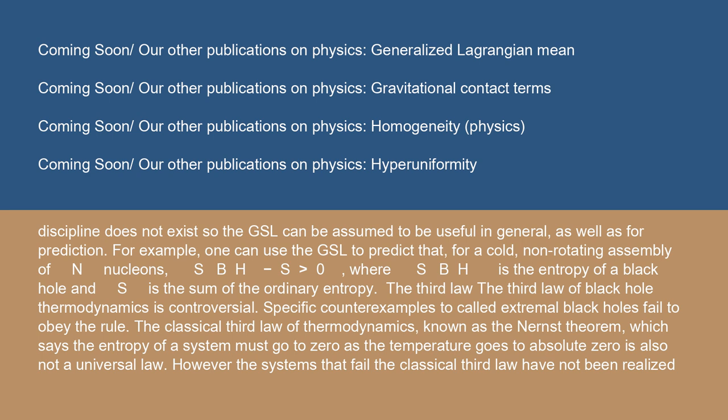The third law: The third law of black hole thermodynamics is controversial. Specific counterexamples to called extremal black holes fail to obey the rule. The classical third law of thermodynamics, known as the Nernst theorem, which says the entropy of a system must go to zero as the temperature goes to absolute zero, is also not a universal law.